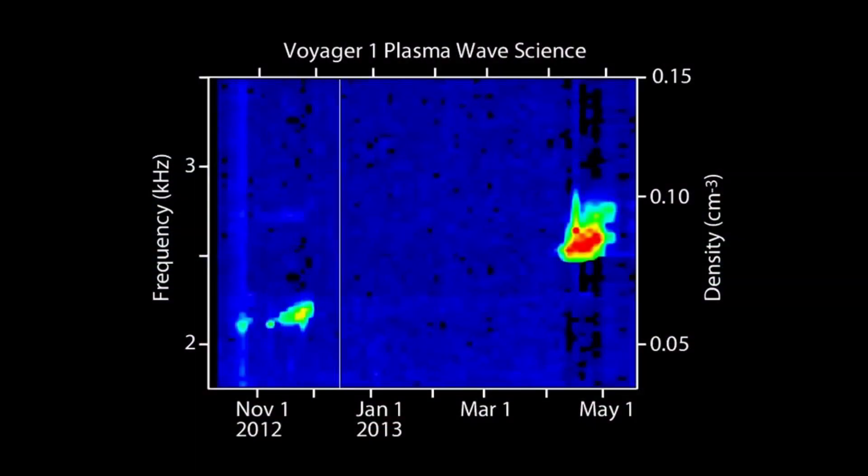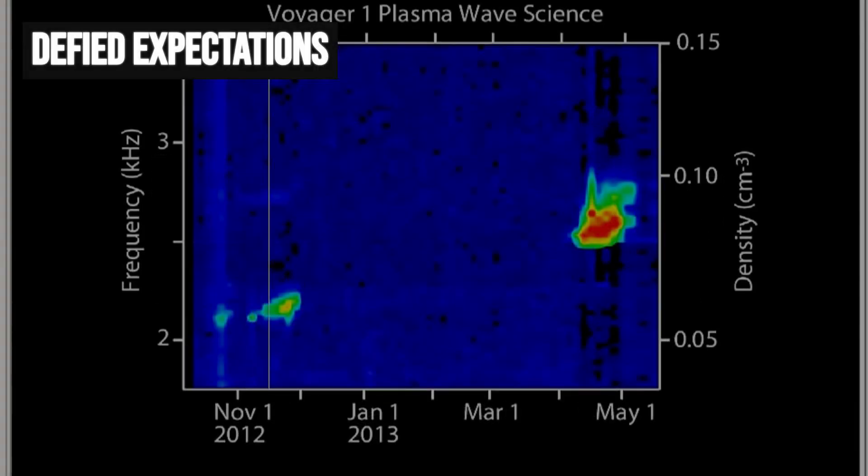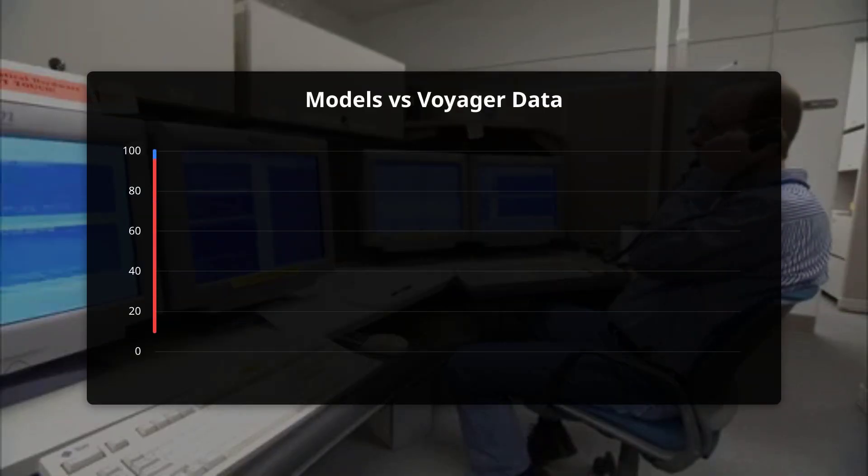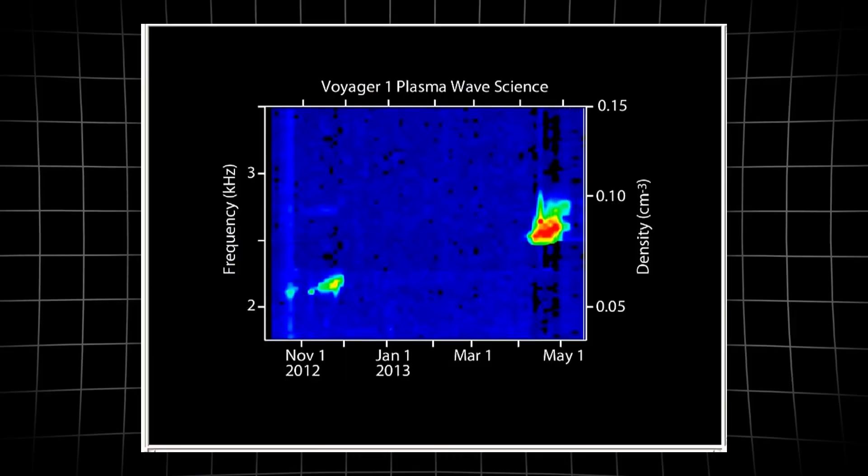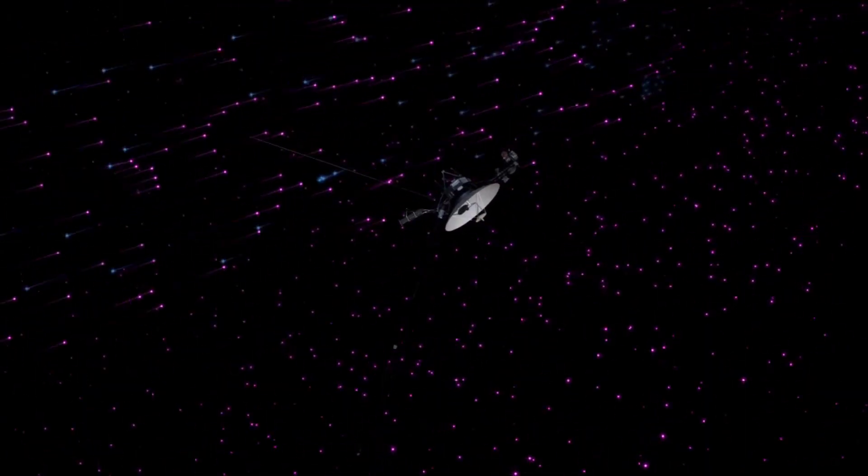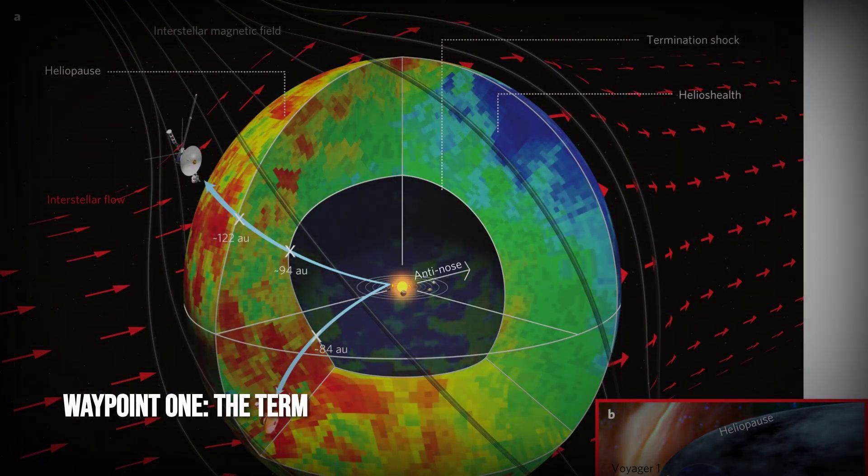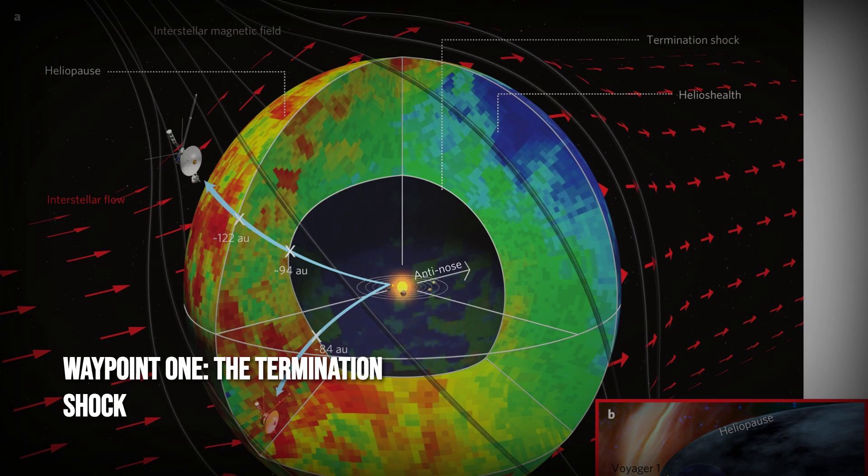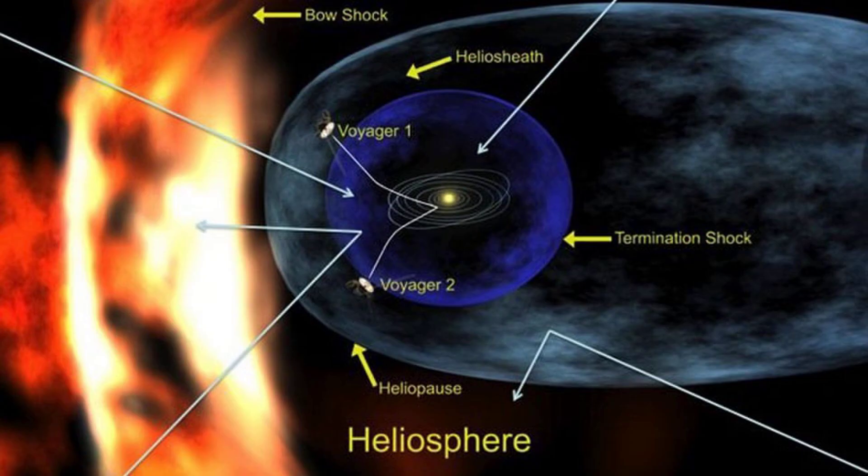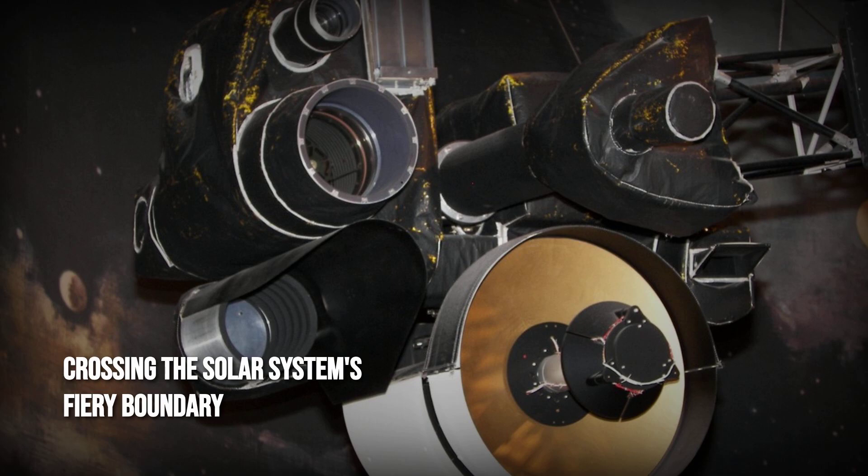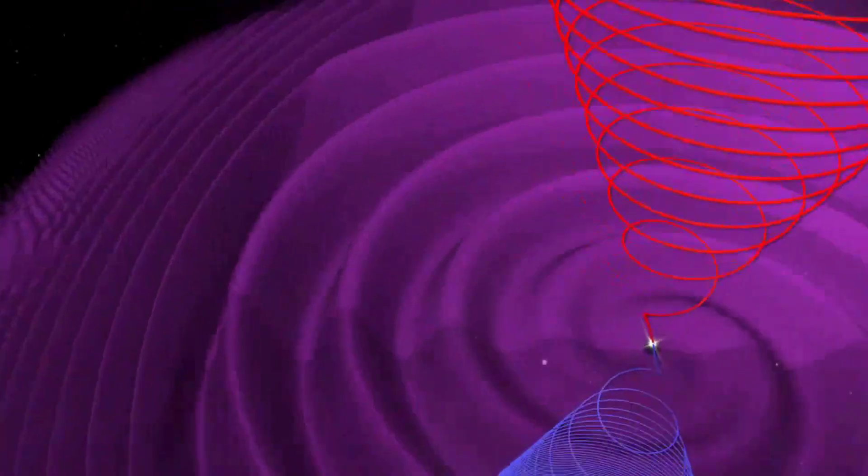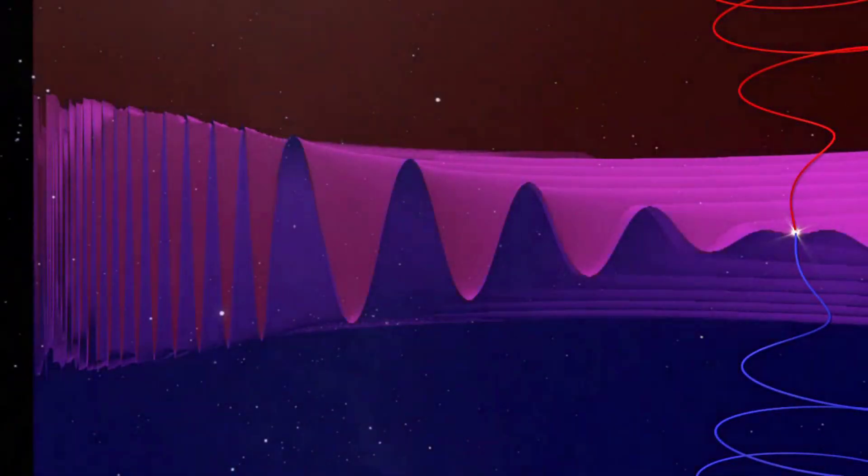When Voyager's instruments finally delivered direct readings, the sheer violence and complexity of the boundary defied every expectation. The old models, once considered reliable, now looked naive in the face of the data streaming back from the edge. The journey to the true edge of the Sun's domain unfolds in stages, each one stranger than the last. The first waypoint is the termination shock, an invisible frontier where the solar wind, racing outward at supersonic speed, suddenly slows and heats as it collides with the thin gas drifting between the stars. Here, Voyager's instruments record a sharp drop in speed and a rise in temperature, but the spacecraft presses on, deeper into a region called the Heliosheath.